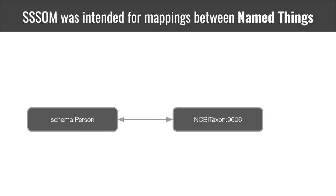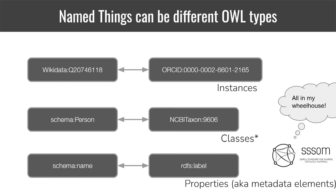I can go over these fairly quickly because we've talked a bit about this already today. SESM was originally intended for simple mappings between named things, things with identifiers — for example, mapping between the concept of person in schema.org and the concept for human in the NCBI taxonomy ontology.